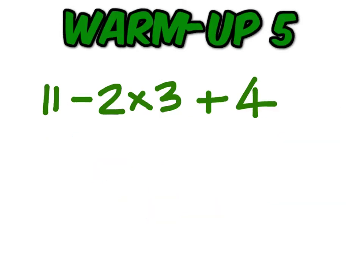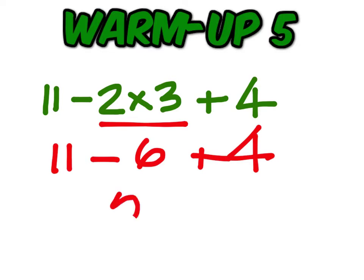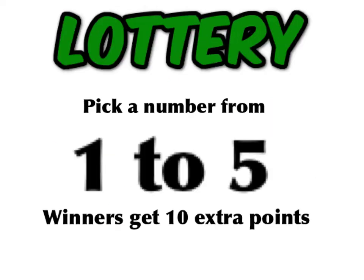Last one. Bring this one up. These will go by quicker as the days go along. 2 times 3 is 6. 11 minus 6 is 5. Plus 4 is 9. Pick a number from 1 to 5 and drop it off on this desk facing me. The winning number today is 2.